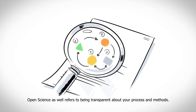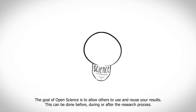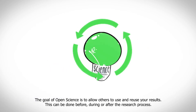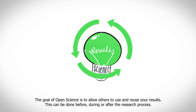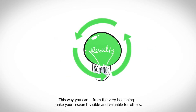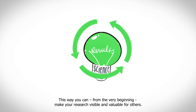Open science also refers to being transparent about your process and methods. The goal of open science is to allow others to use and reuse your results. This can be done before, during, or after the research process, allowing you to make your research visible from the very beginning.